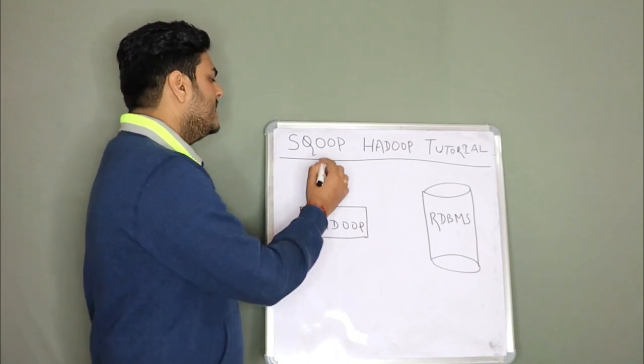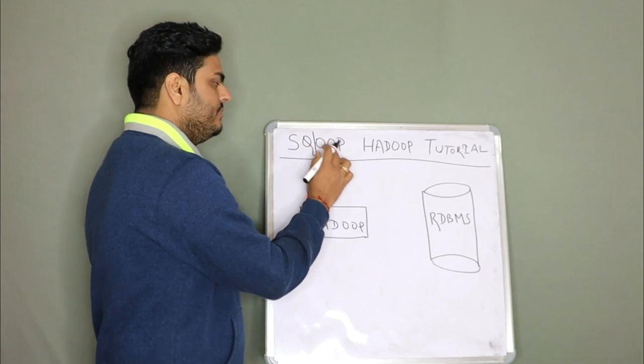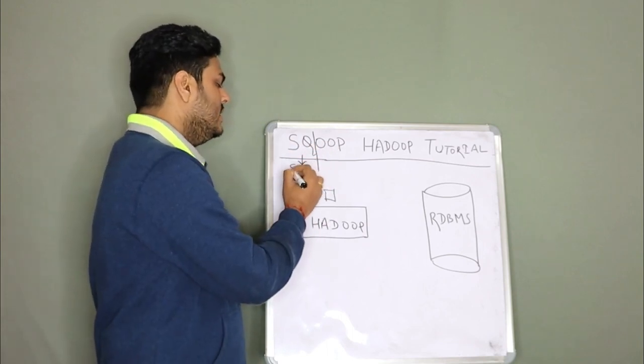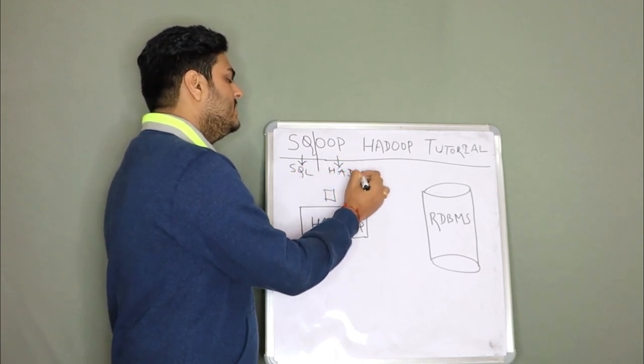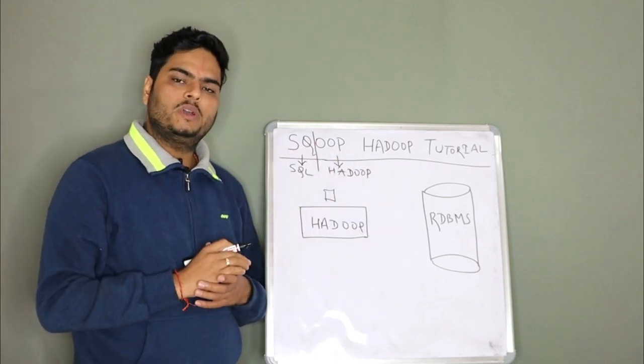Now Sqoop is derived from two words basically S-Q and O-O-P. In this S-Q comes from SQL and O-O-P comes from Hadoop. And that is why we call it Sqoop.